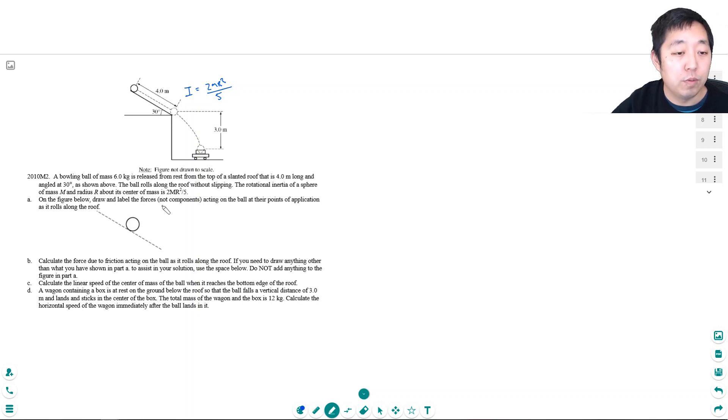On the figure below, draw and label the forces, not components, acting on the ball at the points of the application as it rolls along the roof. Well, I have, this is a free body diagram, I have gravity.